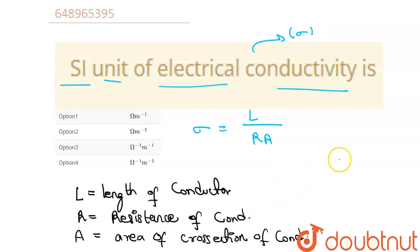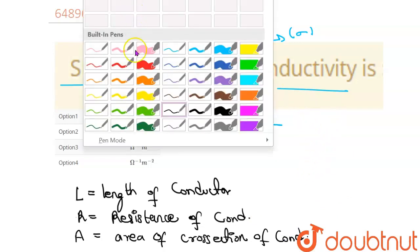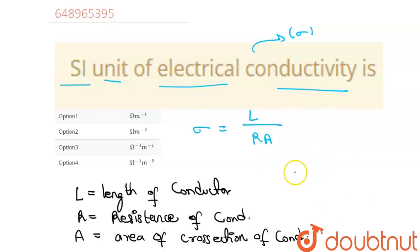So knowing these values, we can write the SI unit. That will be meter over ohm into meter square. It will be very clear that it will be ohm inverse meter inverse.